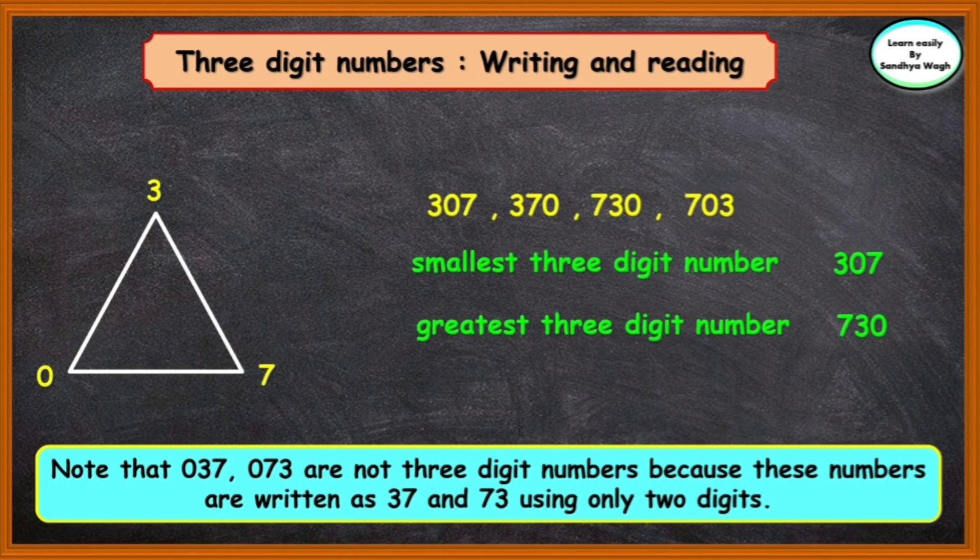Now, let us form the greatest three-digit number using the same digits by arranging them in decreasing order. Here 7 is greater than 3, and 3 is greater than 0. So we arrange the digits as 7, 3, 0 — that means 730. Note that 037 and 073 are not three-digit numbers, because these are written as 37 and 73, using only two digits.